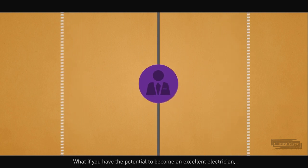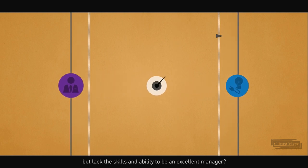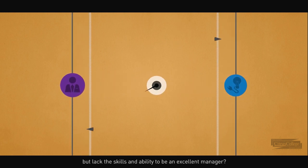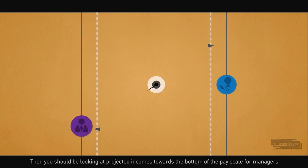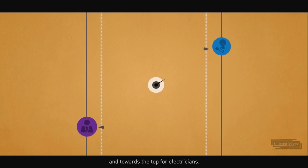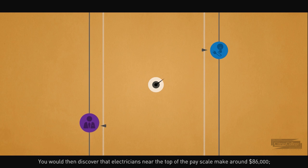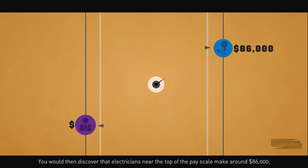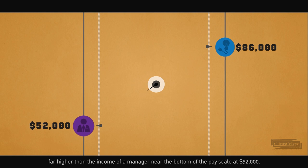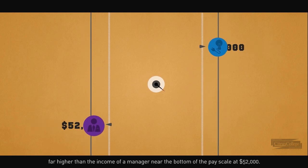What if you have the potential to become an excellent electrician, but lack the skills and ability to be an excellent manager? Then you should be looking at projected incomes towards the bottom of the pay scale for managers and towards the top for electricians. You would then discover that electricians near the top of the pay scale make around $86,000, far higher than the income of a manager near the bottom of the pay scale at $52,000.